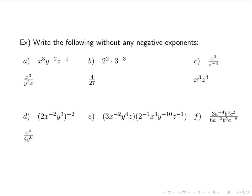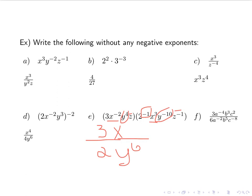For e, we have things being multiplied, so if I have something to a power times something to a power, I add the powers. Coefficient-wise I have 3 on top; the 2 is to a negative power so it goes on the bottom. For my x's, x to the negative 2 times x to the 3 — adding those exponents gives x to the 1, which goes on top. For my y's, y to the 4th times y to the negative 10th gives y to the negative 6th — negative means it goes on the bottom. For my z's, z to the 1 times z to the negative 1 — adding gives 0 — and anything to the 0 is 1, so it just goes away. So the result is 3x over 2y to the 6th.